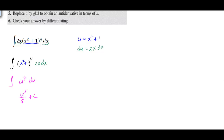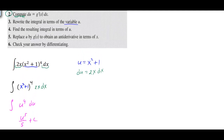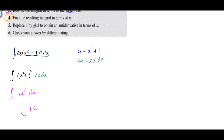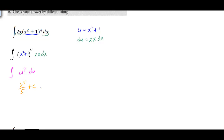Our answer is currently in terms of u, so the last step is to rewrite back in terms of x via resubstitution. Since u equals x²+1, we substitute back to get (x²+1)⁵ over 5 plus C.